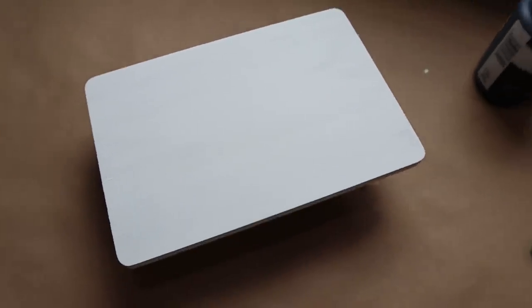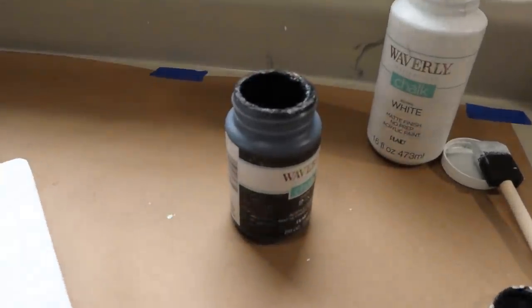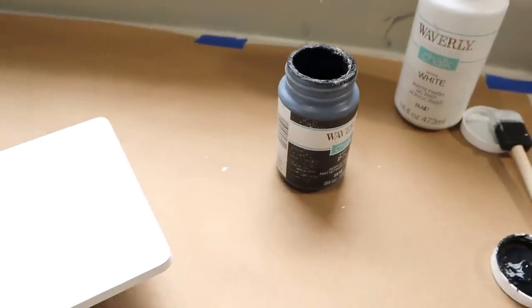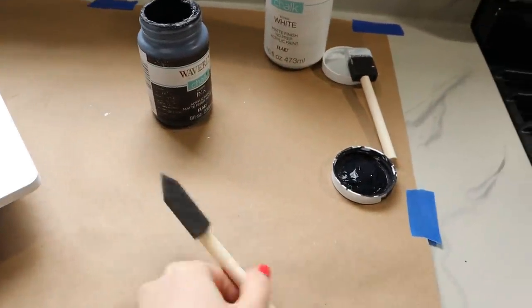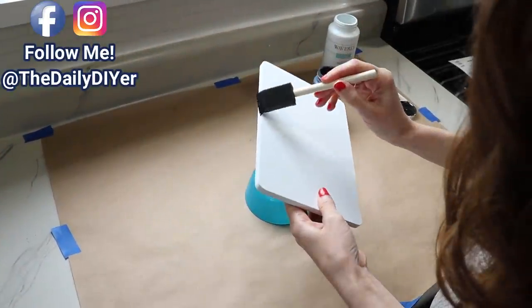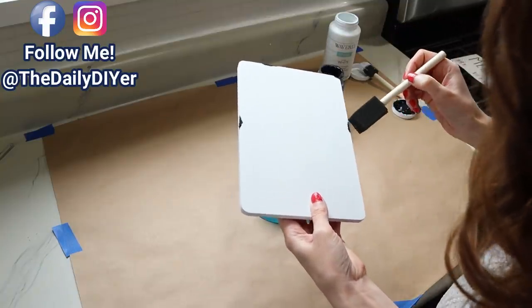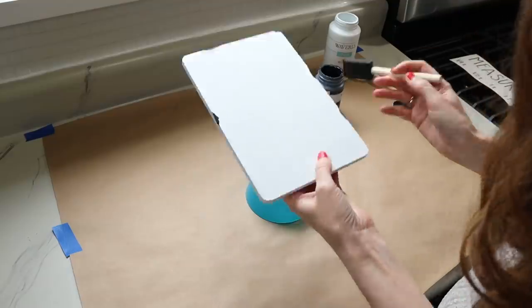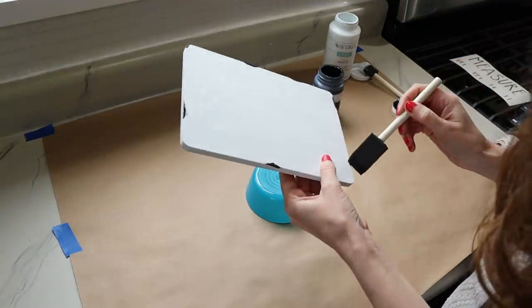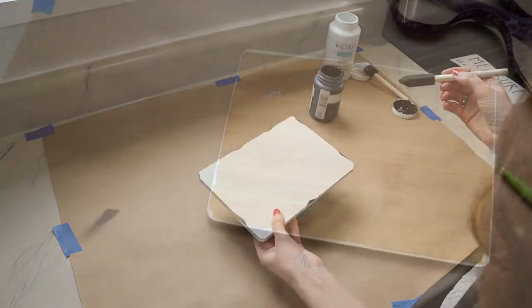All right so now that my white paint is dry I want to give it a little bit of chippiness. I don't want it to look too white and perfect so I'm going to hit the edges with my black paint and a foam paint brush just to give it that enamel chippy look.